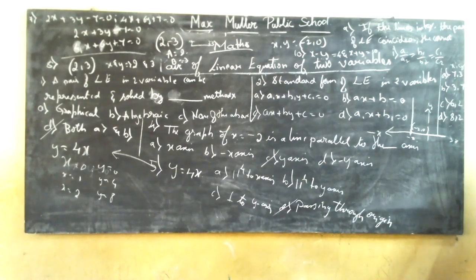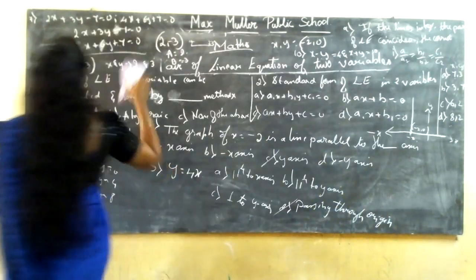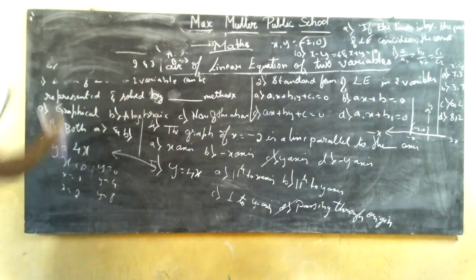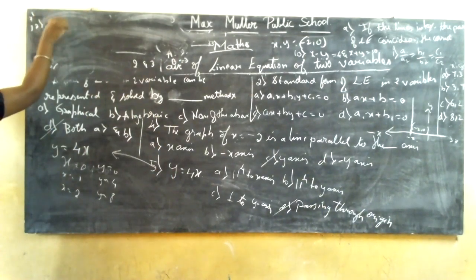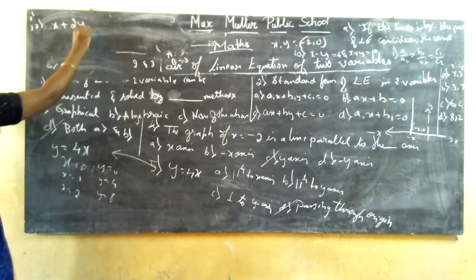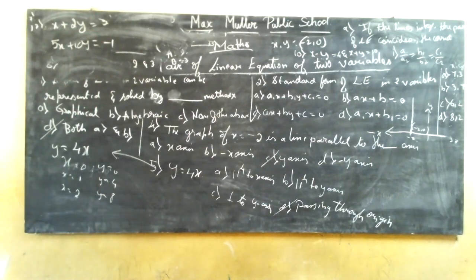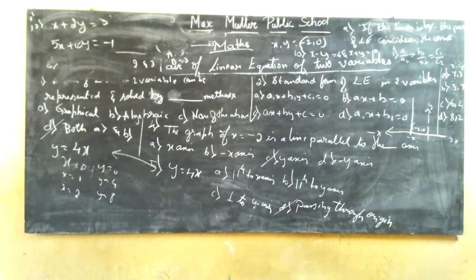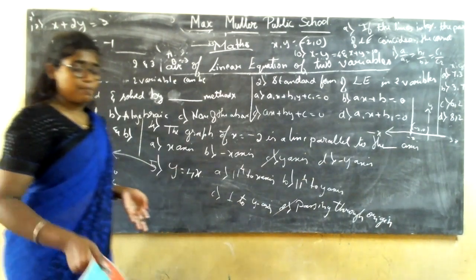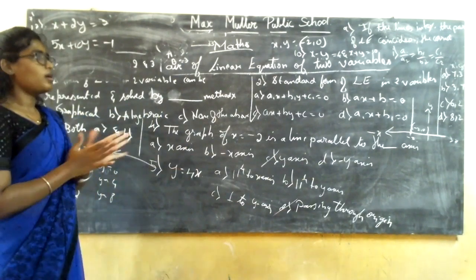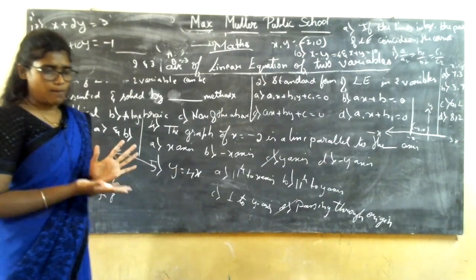Question 12: The pair of linear equations x + 2y = 3 and 5x + 10y = -1 has dash solutions. Take the ratios a1/a2, b1/b2, and c1/c2. This completes the pair of linear equations chapter including all multiple choice question types. In the next class, we will take a new chapter. Thank you, children.